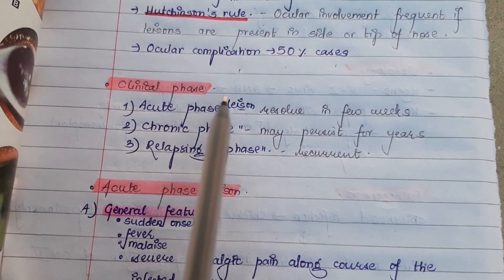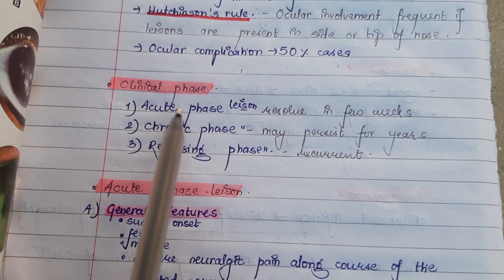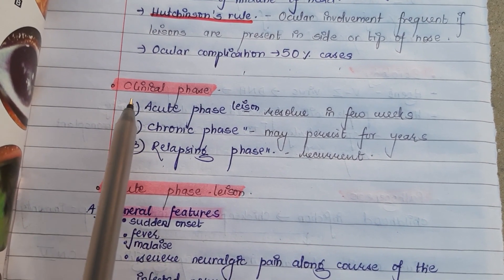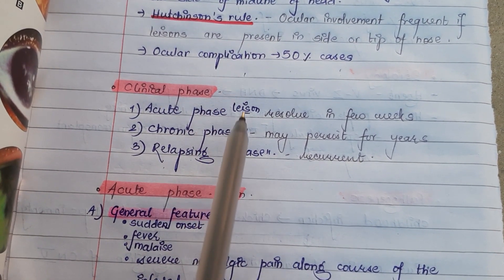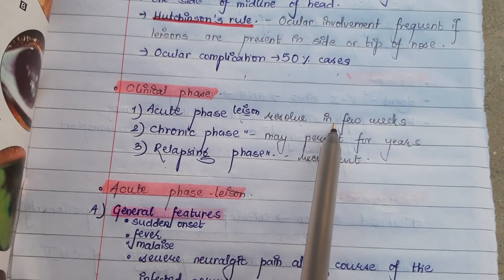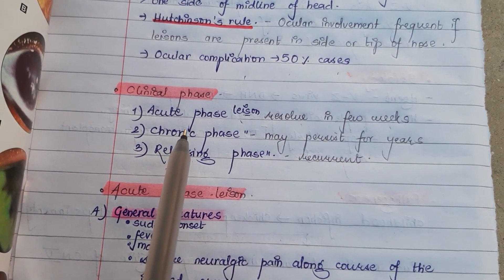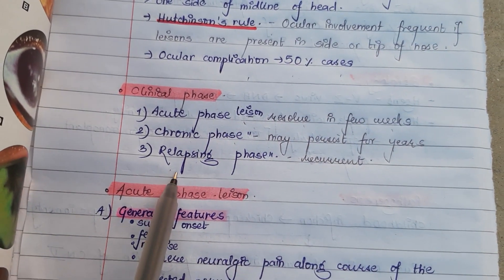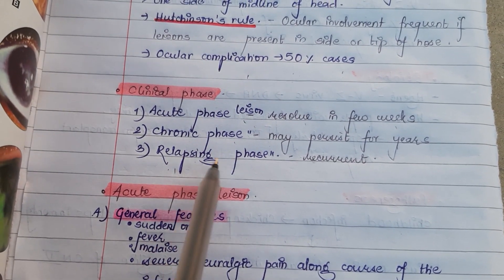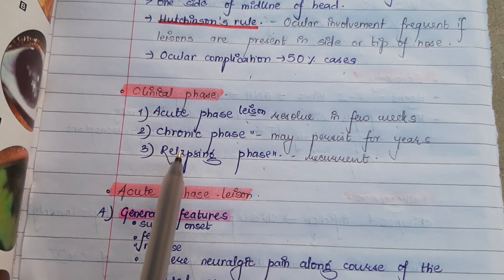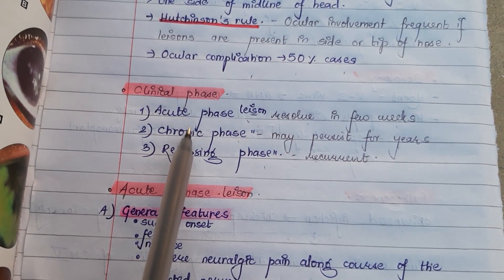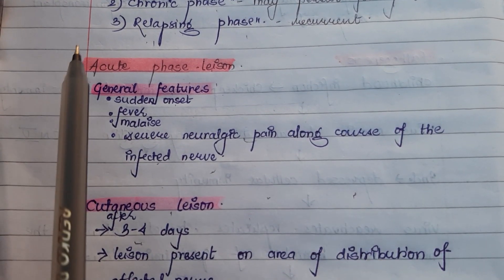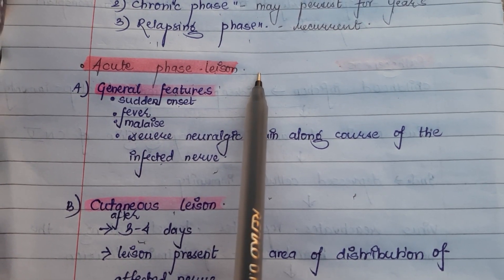The clinical phase of herpes zoster ophthalmicus is divided into three phases: the acute phase, the chronic phase, and the relapsing phase. Acute phase lesions may completely resolve within a few weeks. Chronic phase lesions may persist for years. Relapsing phase lesions may be of either the acute or chronic type and may reoccur after several years.